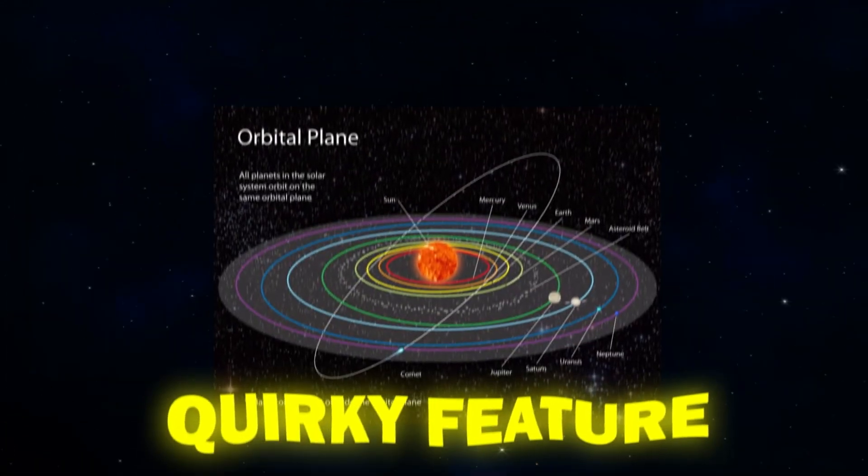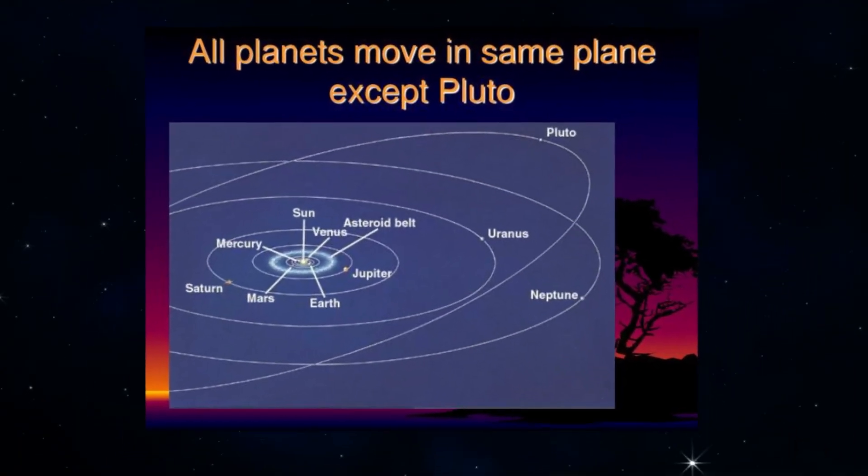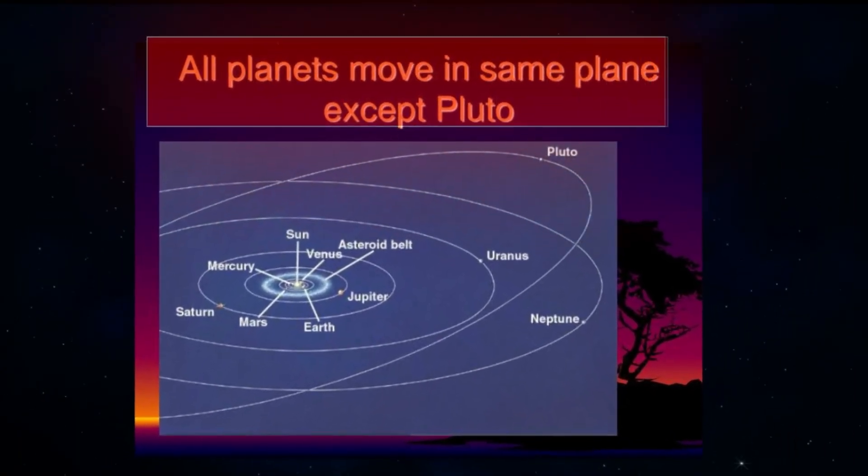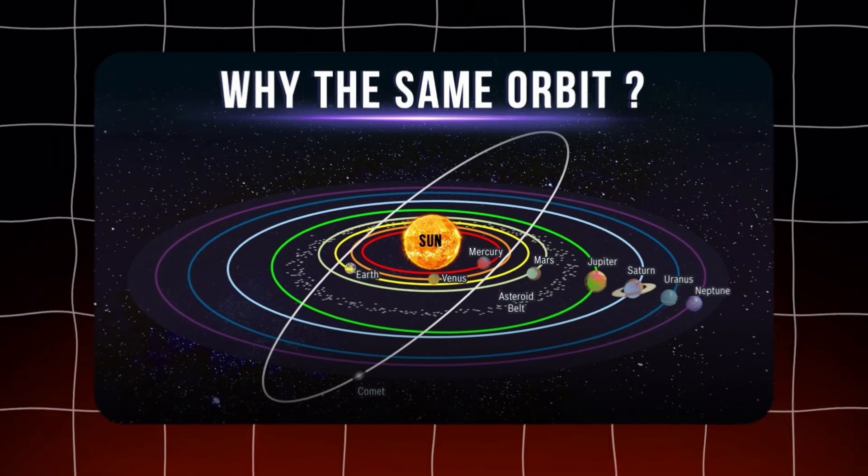It's not just a quirky feature of our little corner of the universe. It's a common pattern seen throughout many other planetary systems. Why do planets align so neatly?